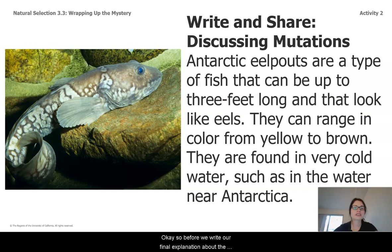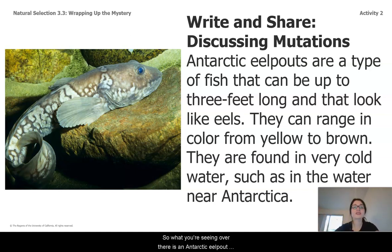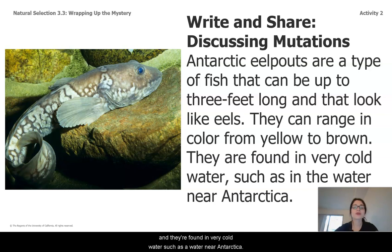Before we write our final explanation about the newts, let's get into a little practice about discussing mutations. What you're seeing over there is an Antarctic eel pout — a type of fish that can be up to three feet long and look like eels. They can range in color from yellow to brown and are found in very cold water, such as the water near Antarctica.